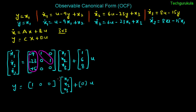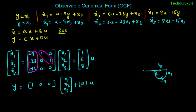Now let us see how these equations can be represented in a signal flow graph. Taking x1 as a state variable, if we integrate x1-dot using an integrator we get x1. We know x1-dot equals minus 9 times x1 (feedback) plus x2 (with gain 1) plus 1 times u as input. x2 integrates to give x2 from x2-dot.